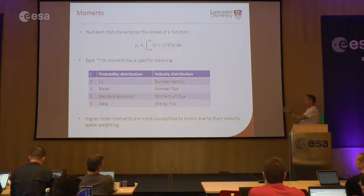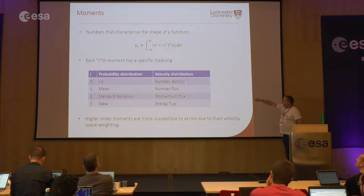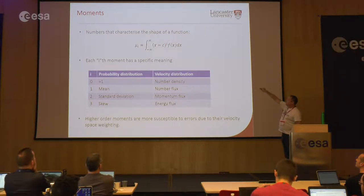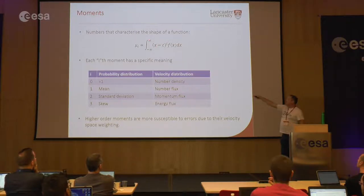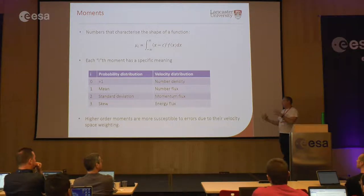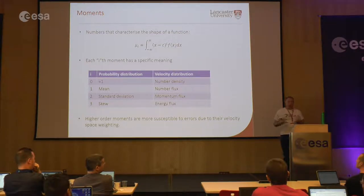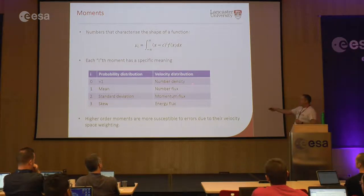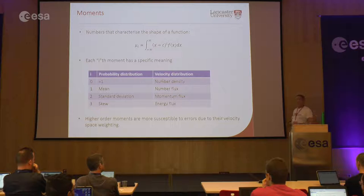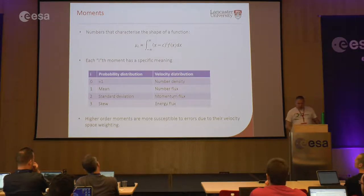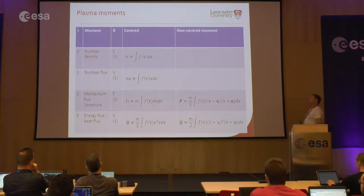As the moment order increases, increasing powers of velocity mean that errors in the higher energy bins accumulate and give a much larger error in the result. As a rule of thumb, lower-order moments are much more reliable than higher-order ones. The higher-order moments are where you start needing to worry about lots of small systematic effects.